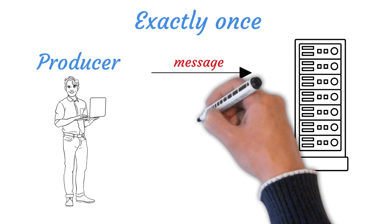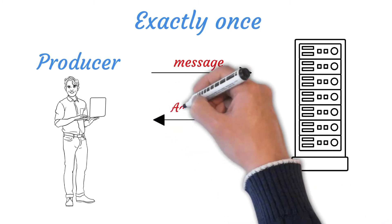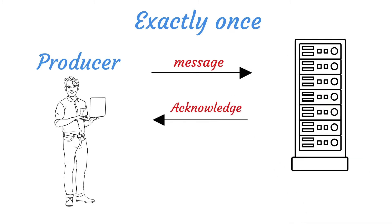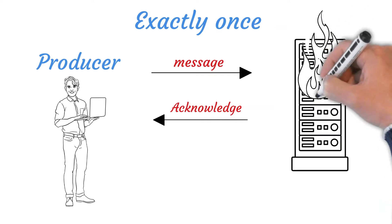Exactly once delivery is typically achieved by filtering out duplicate events, which requires maintaining state on the consumer side in addition to producer side like at least once configuration.